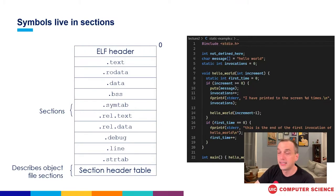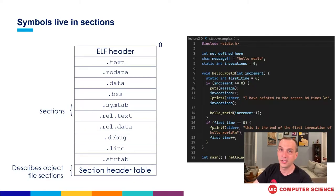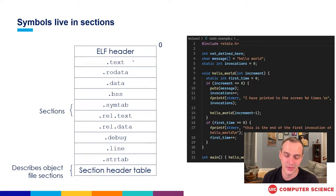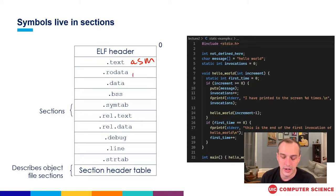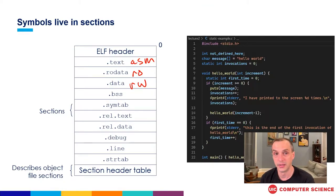All these symbols live in individual sections of the .o file. The .o file has a specific layout defined when Linux was becoming a thing, similar to executable files on other Unix variants. In our text section, we have the assembly language for all the functions compiled by the compiler. We've got read-only data — global variables that are read-only. We've got the regular data section for read-write global variables. And we've got the BSS section, which is a special section.